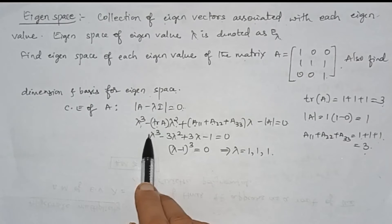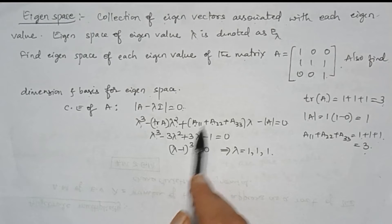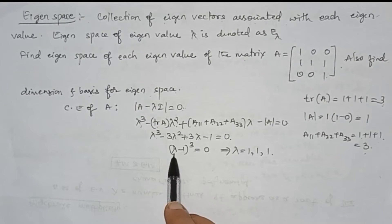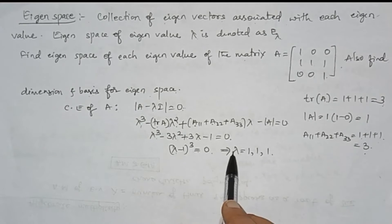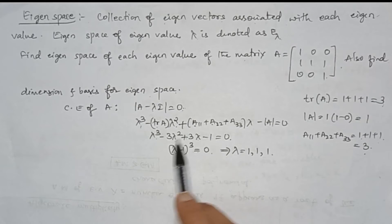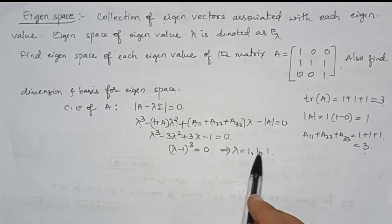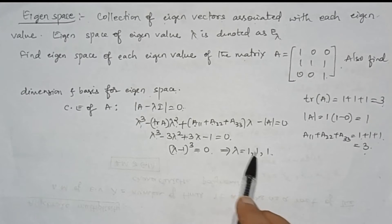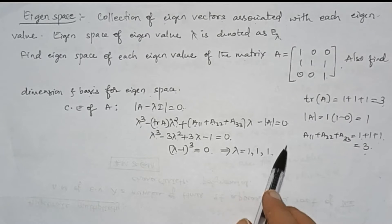Substituting, we get lambda cubed minus 3 lambda squared plus 3 lambda minus 1 equals 0. This is of the form (lambda minus 1) cubed equals 0, using the (A minus B) cubed formula. Therefore, the only eigenvalue is lambda equals 1, repeated 3 times, since it is a cubic polynomial.